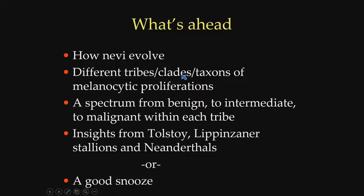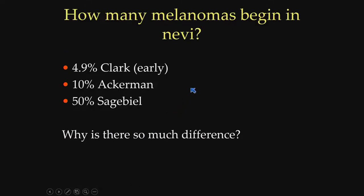To give you an idea of tribes, we have the blue nevic tribe, the deep penetrating nevic tribe, and the pigmented spindle cell nevic tribe. Within each one of these tribes, there's benign, intermediate, and high-risk lesions. And some insights from Tolstoy and some comments about Lipizzaner stallions will all be in there.